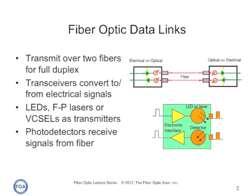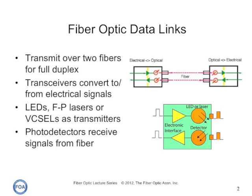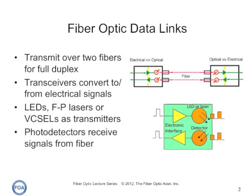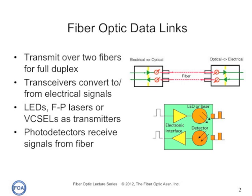Just as with copper wire or radio transmission, the performance of the fiber optic data link can be determined by how well the reconverted electrical signal out of the receiver matches the electrical input to the transmitter.